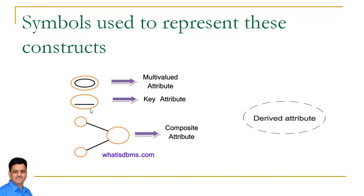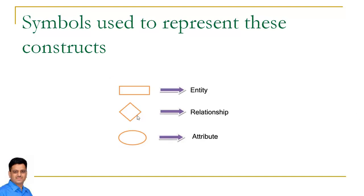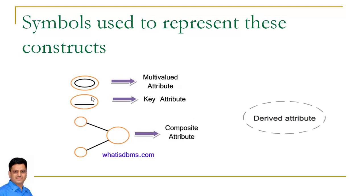Agar ek attribute ki value unique hai — yaani ki wo key attribute hai — toh hum us attribute ko underline kar dete hain. Agar ek attribute composite hai jisko hum split kar sakte hain, toh uske liye hum ek specific symbol use karte hain to represent composite attribute. And dotted oval is used to represent derived attributes. These are the symbols which are used to represent constructs of the ER model.